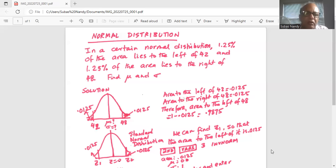And 48 is another number located on the right of the mean. To the right of 48 the area is 0.0125. So the area to the left of 48 is, since total area under the curve is 1, 1 minus 0.0125 is 0.9875, the area on the left of 48 under the normal curve.